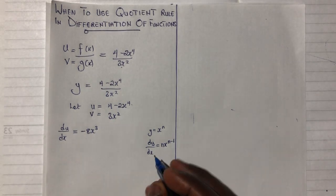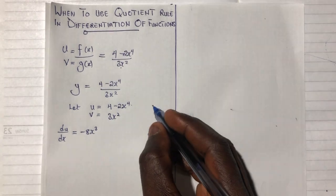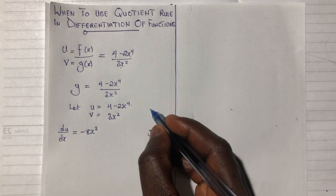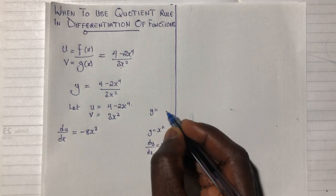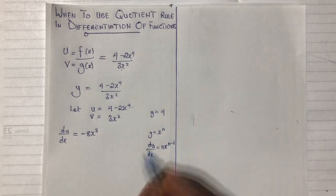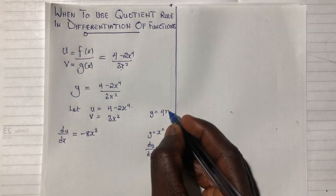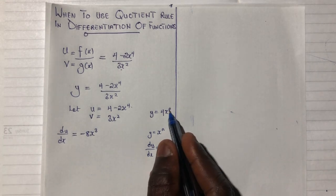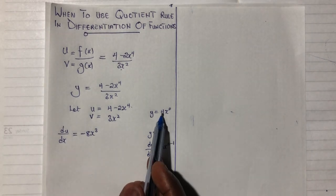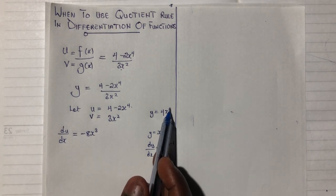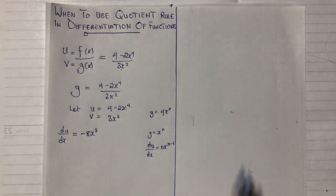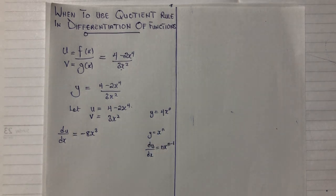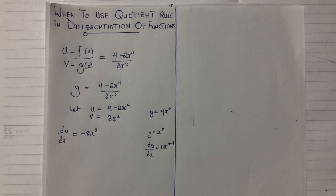For a constant — if I have y equal to 4, that is 4 times x raised to the power 0. When I differentiate this, it is 0 times 4 times x to the power 0 minus 1, giving me 0. That is why the derivative of a constant is always 0.